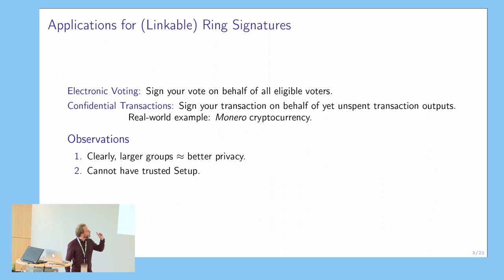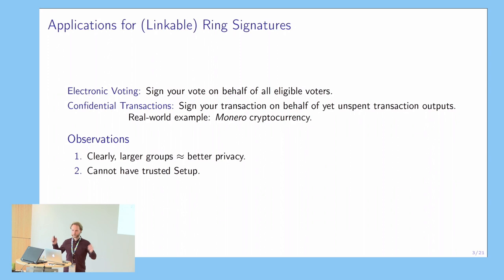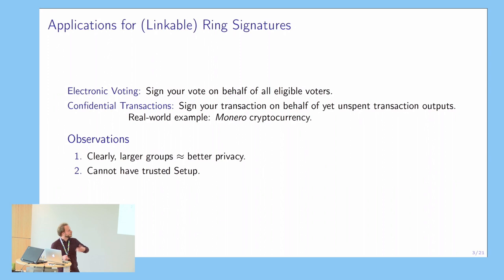Two observations: clearly the larger the size of the group that you sign under, the better your privacy as a signer, so the best you could hope for would be one over the size of the ring in terms of whether someone can guess who signed the signature. The second observation is we cannot have in both of these cases a trusted setup, so it shouldn't be possible that someone who obtains information from this trusted setup can later unveil your vote or track your transactions when you wanted them to be private.